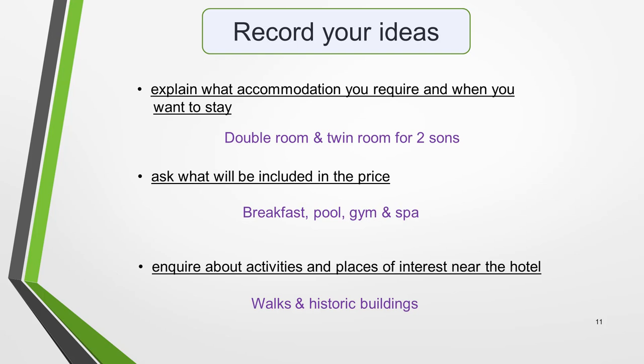For 'Explain what accommodation you require and when you want to stay', I've noted down 'double room' and 'twin room for two sons'. For 'Ask what will be included in the price', I've jotted down 'breakfast', 'pool', 'gym' and 'spa'. And for 'Inquire about activities and places of interest near the hotel', I've written down 'walks' and 'historic buildings'. So those are my ideas — that's our planning complete. Once you've had some practice, you'll be able to do this in just a few minutes. Taking time to plan makes writing IELTS letters far quicker and easier, and you'll also write a better letter and get higher marks.